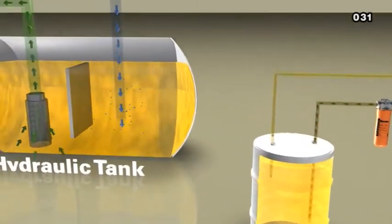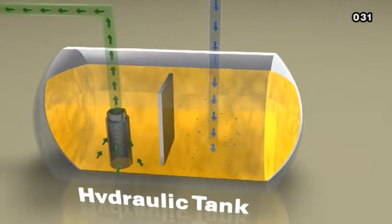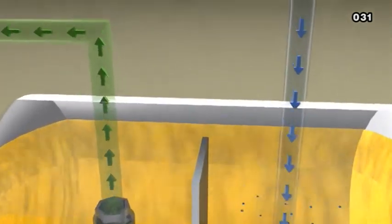Water can also enter the hydraulic system via the holding tank when moist air inside the tank condenses as the outside air cools.